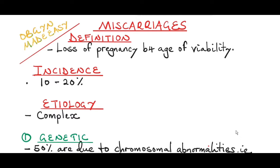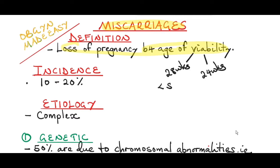Spontaneous abortions are preferably known as miscarriages. A miscarriage is a loss of pregnancy before the age of viability. In developing countries, the age of viability is about 28 weeks gestational age, whilst in developed countries it is about 24 weeks gestational age. Miscarriage can also be defined as loss of a fetus weighing less than 500 grams, which is not capable of independent survival.